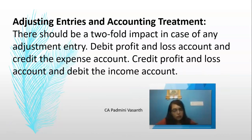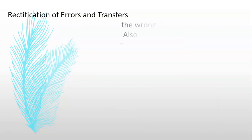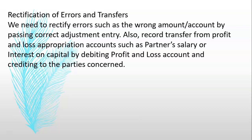When we incorporate an adjusting entry, it has a two-fold impact. Either Debit Profit and Loss Account and Credit the Expense Account, or Credit Profit and Loss Account and Debit the Income Account. Similarly, in the case of rectification of errors and transfers, we need to rectify errors such as wrong amount, wrong posting, etc. These also have a double entry effect.